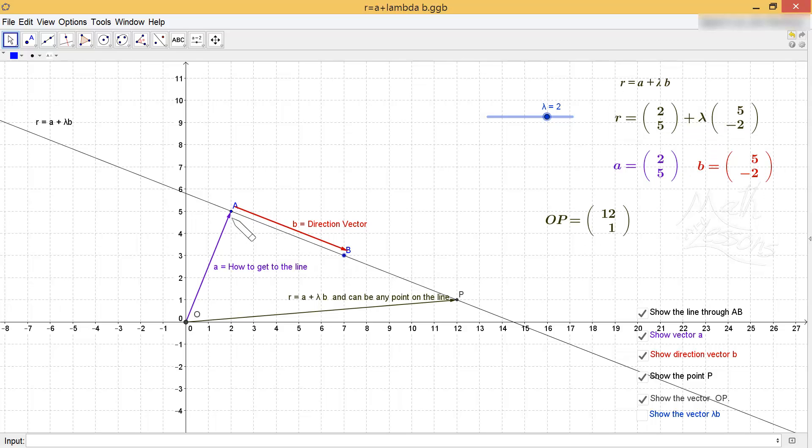Okay, and B is a direction vector. Now there's an infinite number of direction vectors and an infinite number of OA's. We just have to choose one that fits our question.